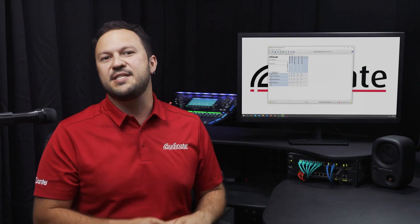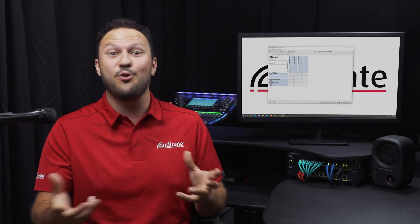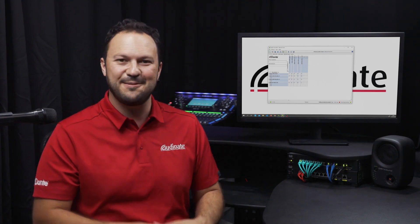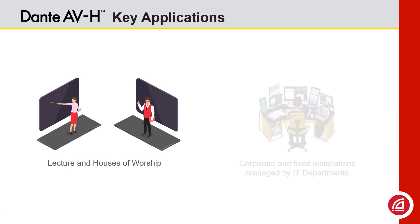In other words, connect your Dante AVH enabled device into the network and patch video signals anywhere in that building or even across the campus. For systems like education, classrooms or houses of worship, the same AV technician already familiar with Dante can now patch video from the same PC running Dante controller.